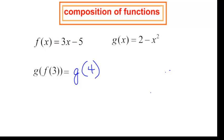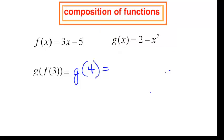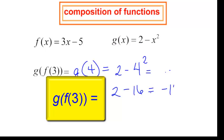Now I still have this g function, so I am looking at g at 4. Going to the g function, g at 4: instead of 2 minus x squared, it would be 2 minus 4 squared. That would be 2 minus 16, because the negative is not part of the squared term. And 2 minus 16 is negative 14.